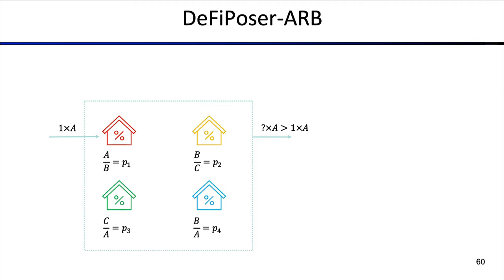Now let's look at a particular example of the DeFi graph, specifically DeFiPoser ARP — the Bellman-Ford version. We have a blockchain state with four markets. We have assets A and B, then B and A, B and C, and C and A. The red and blue markets both have the same assets. Our objective is to input one element of asset A and get back more than we put in initially.